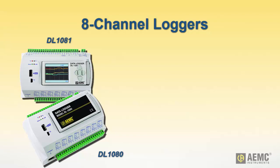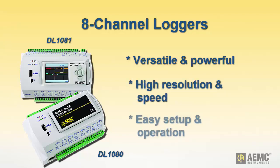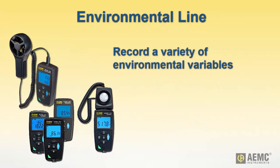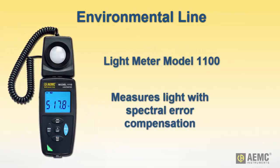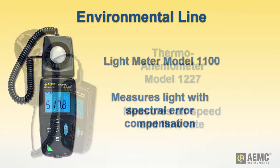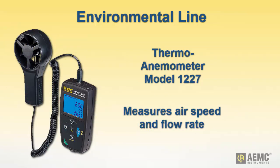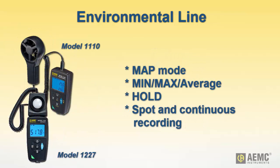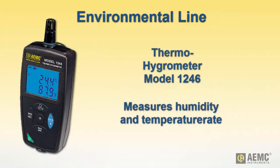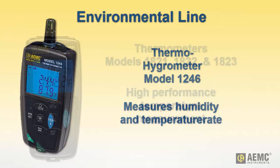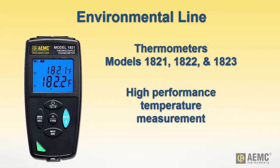AEMC 8-channel data loggers are versatile, powerful, and cost-effective instruments for handling analog, digital, and other types of variables with high resolution and speed. They offer high performance and are easy to configure and operate. The new AEMC Environmental Line series of data loggers records a variety of environmental quantities. The model 1110 light meter measures light with spectral error compensation on LED or fluorescent sources. The model 1227 thermal anemometer measures air speed and flow rate. Both feature map mode, min-max average, and hold functions, and Spotter continues recording up to one million points. The model 1246 thermal hygrometer measures humidity and temperature. Models 1821, 1822, and 1823 contact thermometers offer versatility and high performance for temperature measurements.